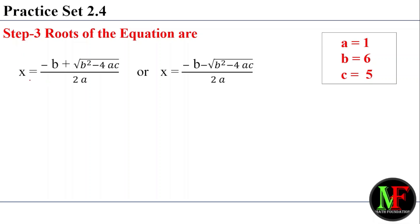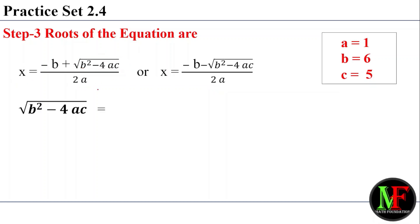Step number 3: apply the roots formula. There are two roots: x equals minus b plus root of b squared minus 4ac, divided by 2a; and x equals minus b minus root of b squared minus 4ac, divided by 2a. First, we need to find the value of b squared minus 4ac.